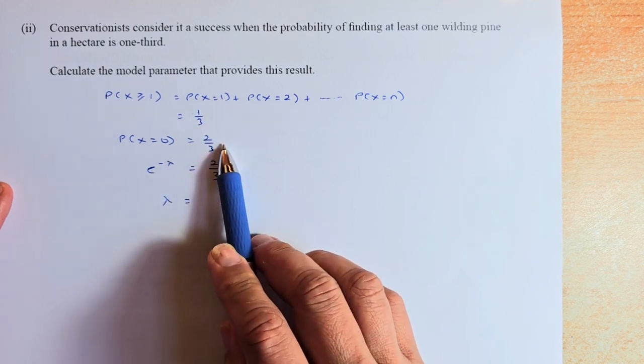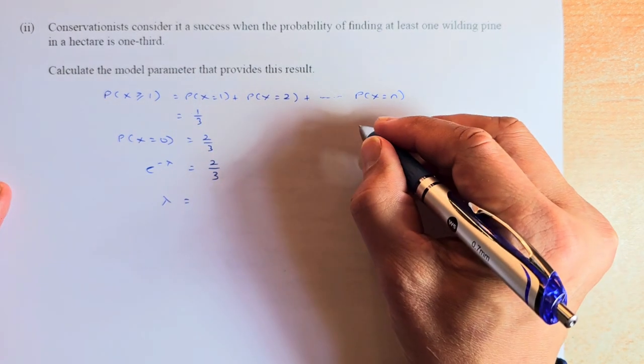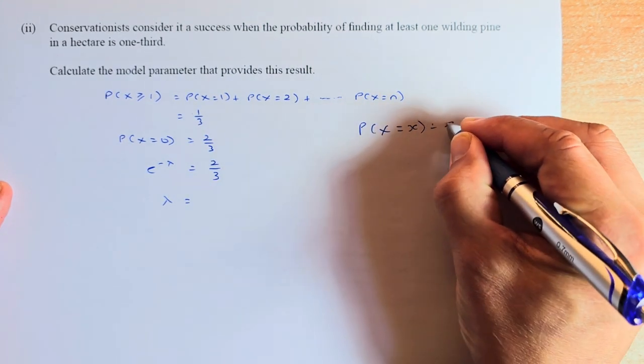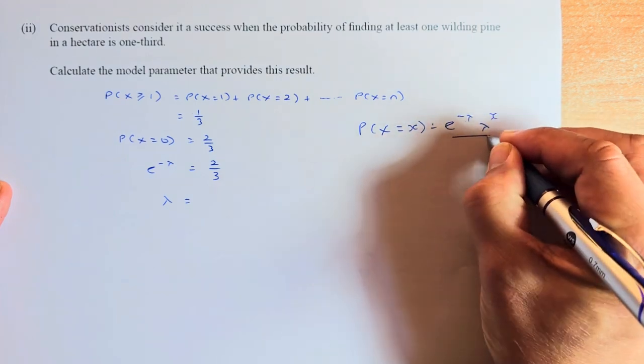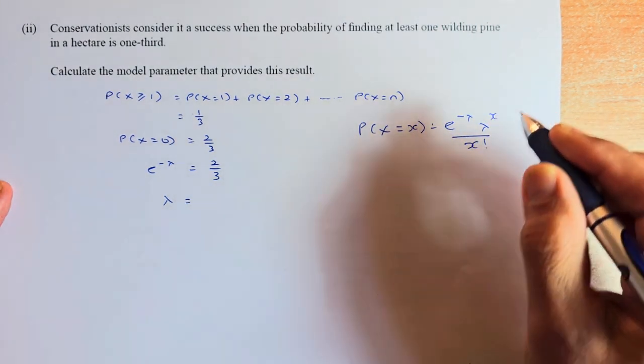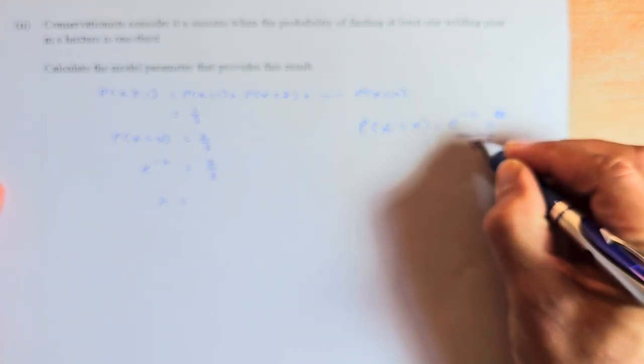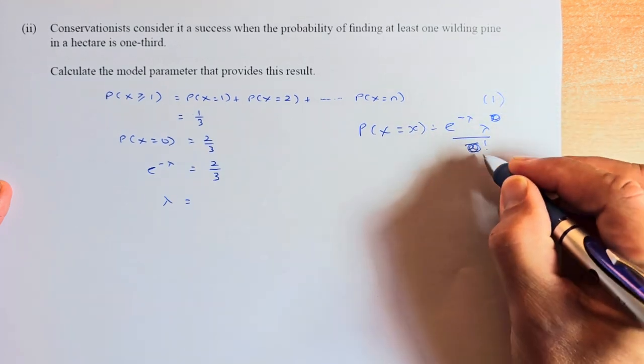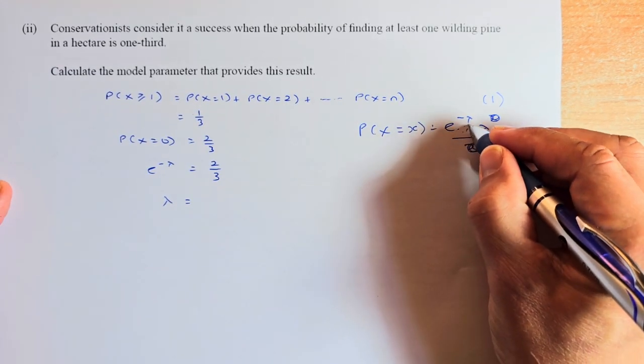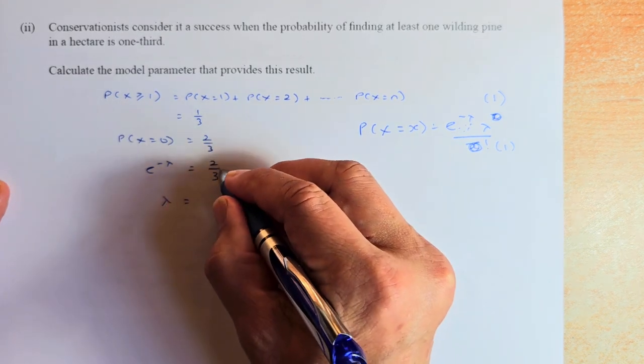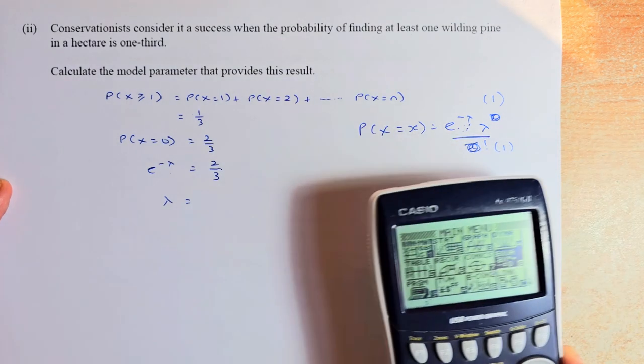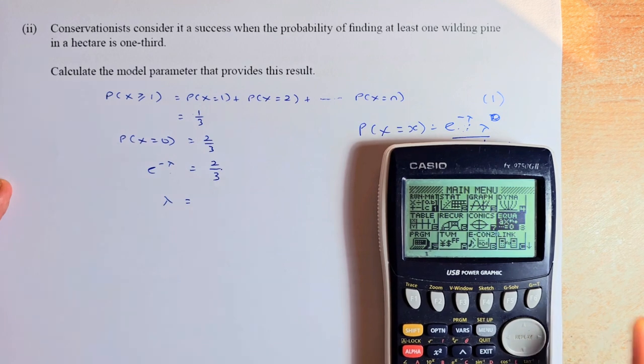So the probability for x for Poisson is going to be e^(-lambda) * lambda^x / x!. If x equals 0, this part becomes 0 and this part becomes 0. So this becomes 1. Lambda to the power of 0 is 1. 0 factorial is also 1. So you're left with e^(-lambda). So e^(-lambda) equals two-thirds. We are going to solve this using the graphic calculator. If you are not sure, I shall teach you how to do it. So if you do not know your algebra, don't worry. Go to equation.